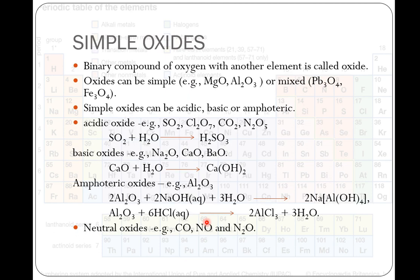Now, simple oxides. Binary compound of oxygen with another element is called oxide. Oxides may be simple like magnesium oxide, aluminium oxide or mixed. Mixed means like Fe3O4. You have read about it in the chapter of solid state. It is a combination of FeO and Fe2O3, so together it becomes Fe3O4. Similarly, Pb3O4 also. Such oxides are called mixed oxides.